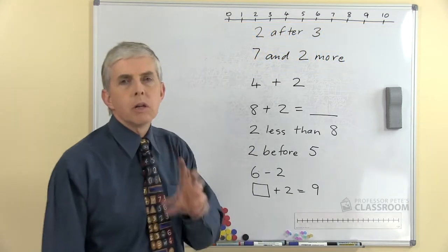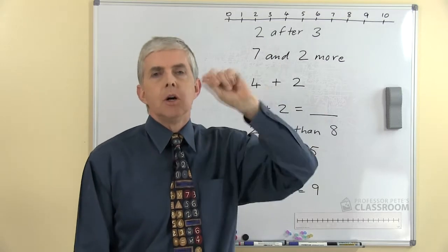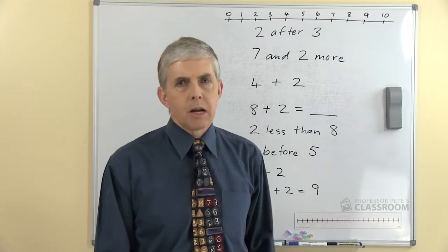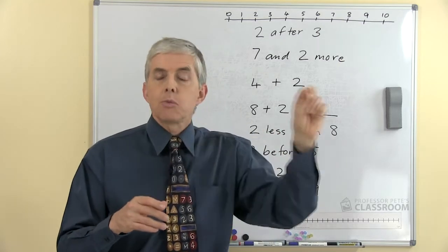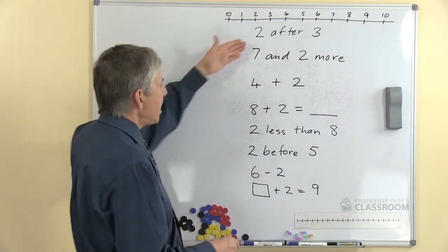Number lines are great for small increments. If we're going to be counting on or skipping over by one or two or three, that's a really good use for a number line because they're close together, it's easy to see, and it matches with the sequence of number names.